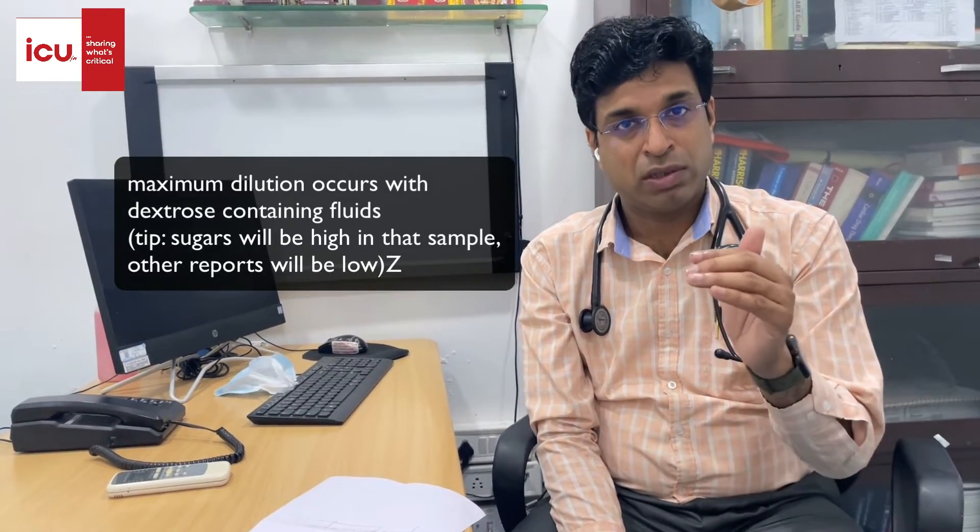Specifically if the solution contains dextrose, the dilution is more and sugars will come high. So the first clue is too much shift in electrolytes in the lower or higher direction — all electrolytes come low if it is a dextrose-containing fluid, or specifically elevated for sodium or potassium. For heparin, your APTT values will also get altered, so a sudden high APTT should make you think of a pump sample. You should also compare these reports with the previous reports of the patient to see whether they were in the same range or there is a huge difference.